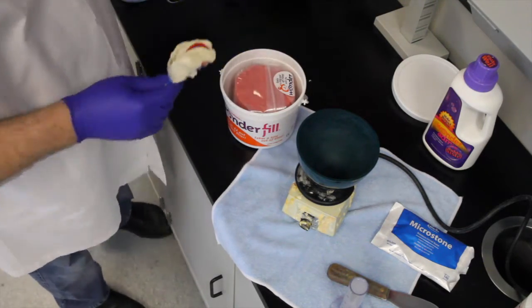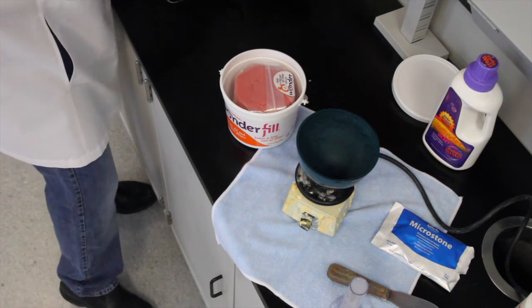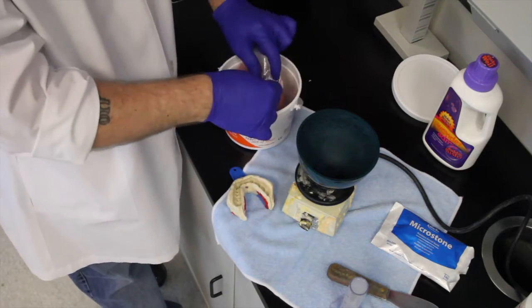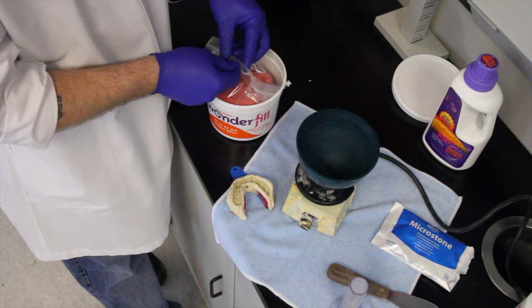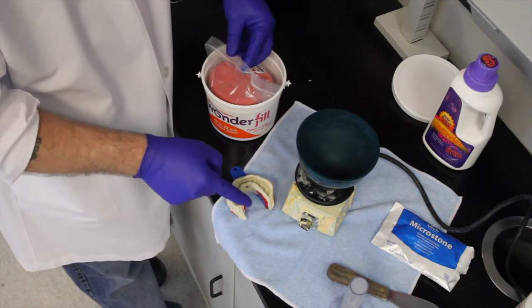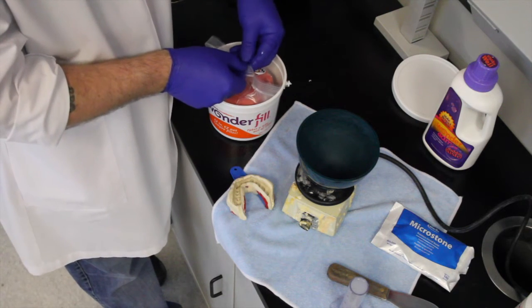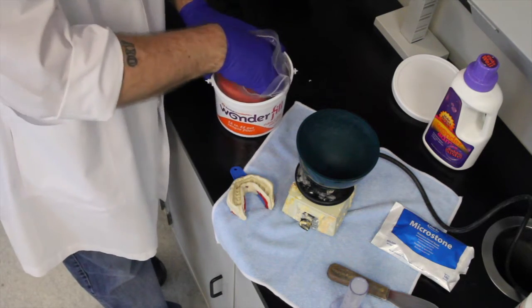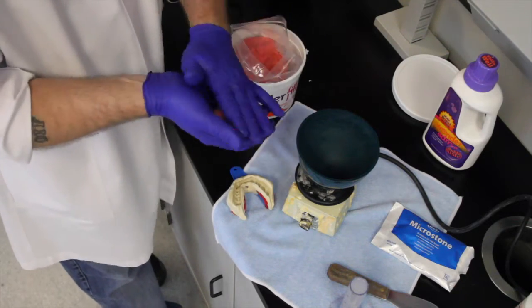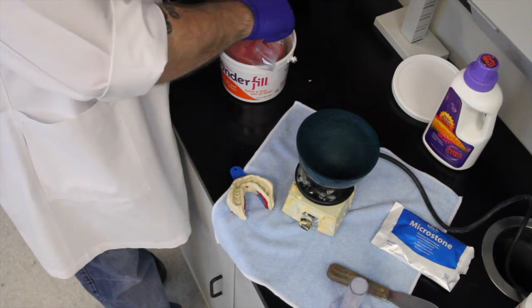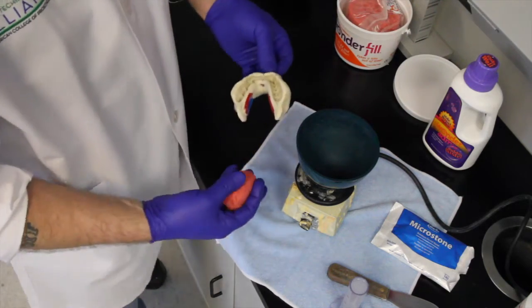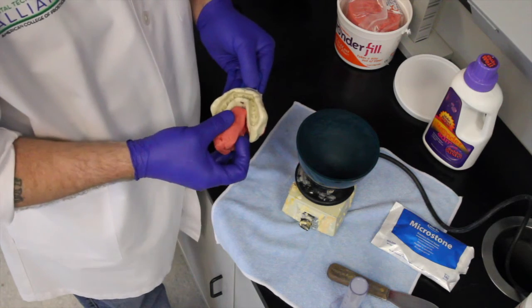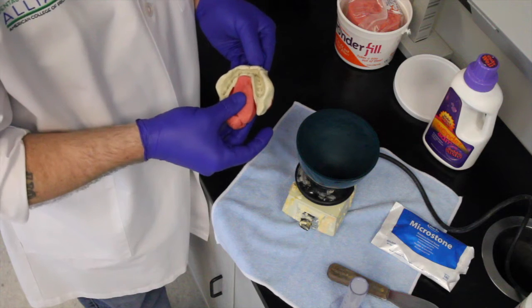Take your model and rinse the Cabicide off. Shake off the excess water. Open your Wonderfill. We're just going to be filling this tongue space in right here. So we're not going to need a lot. This product is reusable. So I actually have a container of brand new and another container of used. Get yourself a nice little golf ball size of Wonderfill. Adapt that into the impression without distorting the impression itself.